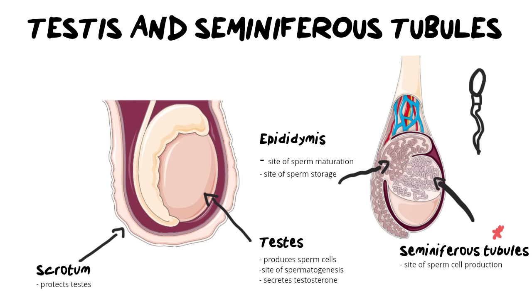While the sperm is in the epididymis, there is no seminal fluid present — in other words, no semen or liquid is present at this point. The seminal fluids are added later on, and we're going to look at when and where they come from as well as their functions.